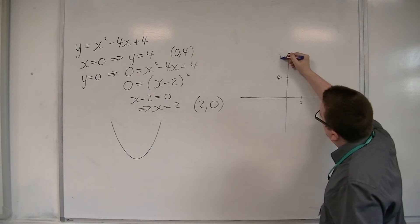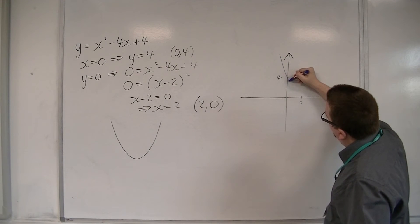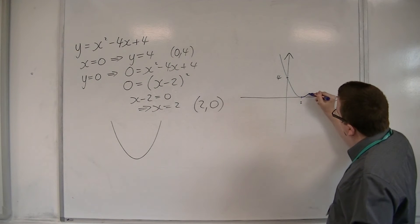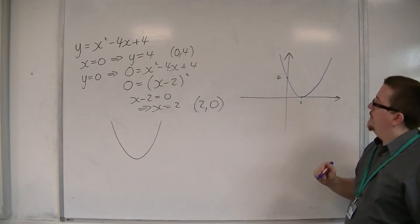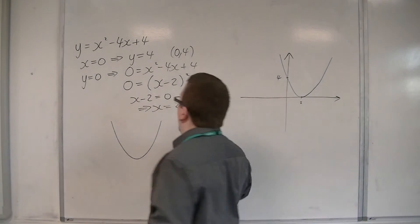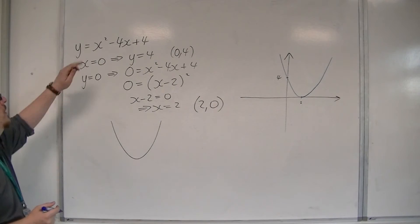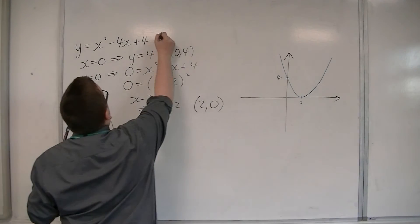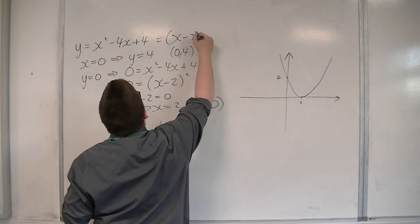So the curve will come through 4 on the y-axis, and then just brush the x-axis at that point, at the point 2. And that would be the shape of the curve, y is equal to x squared minus 4x plus 4, or y is equal to x minus 2 all squared.